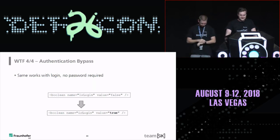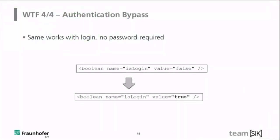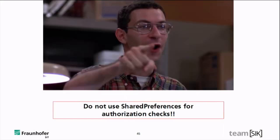Last but not least, the same applied to login. There's an 'is_login' flag. If you were logged in before, the username and password are stored, and if you set this flag to true, it automatically logs you in without typing credentials. The takeaway: please do not use SharedPreferences for authorization checks. For bug hunters, always look into SharedPreferences — there's a lot to find. For developers, please don't do this. We've talked about this for years and there are still apps that don't understand this.